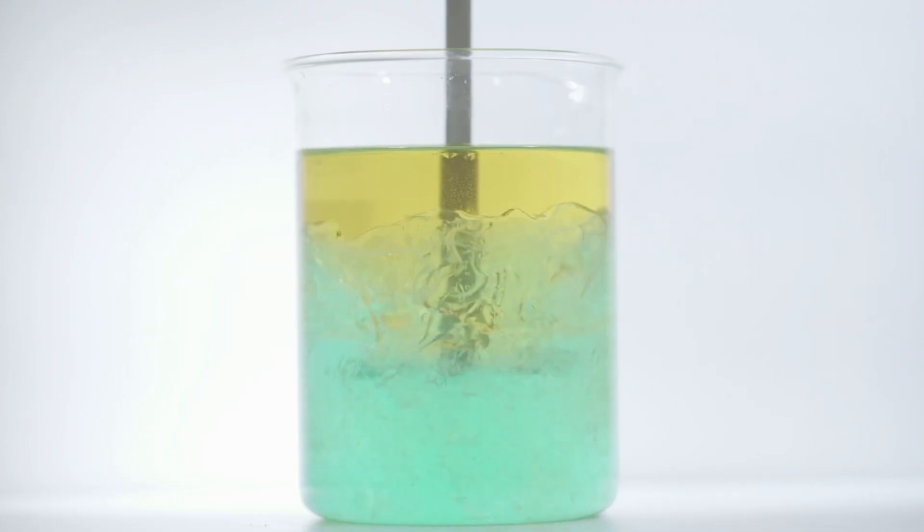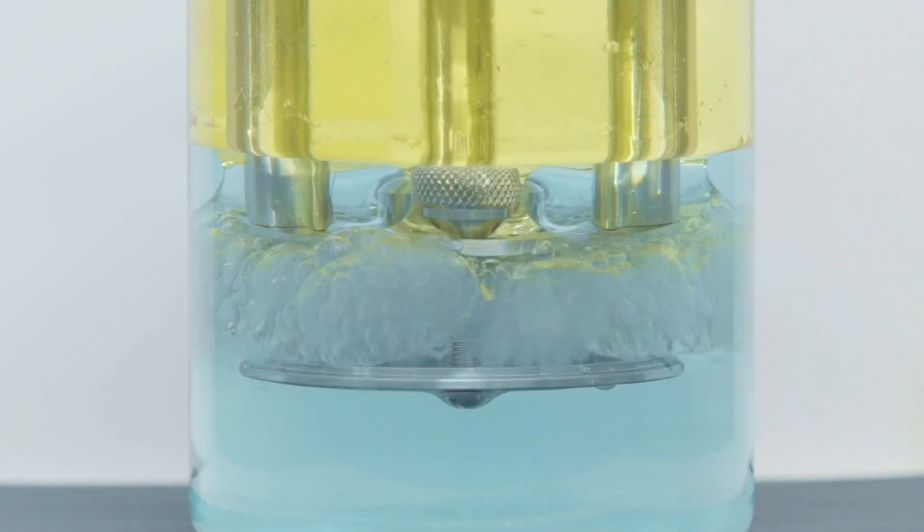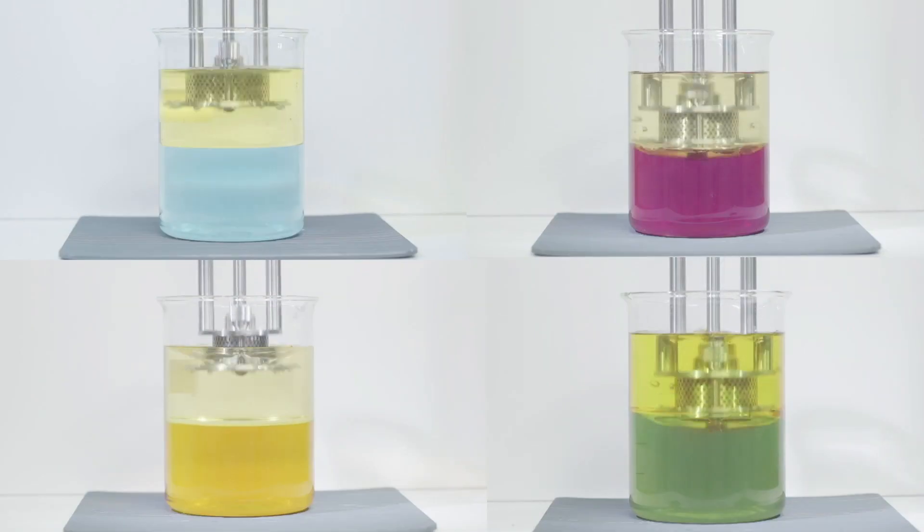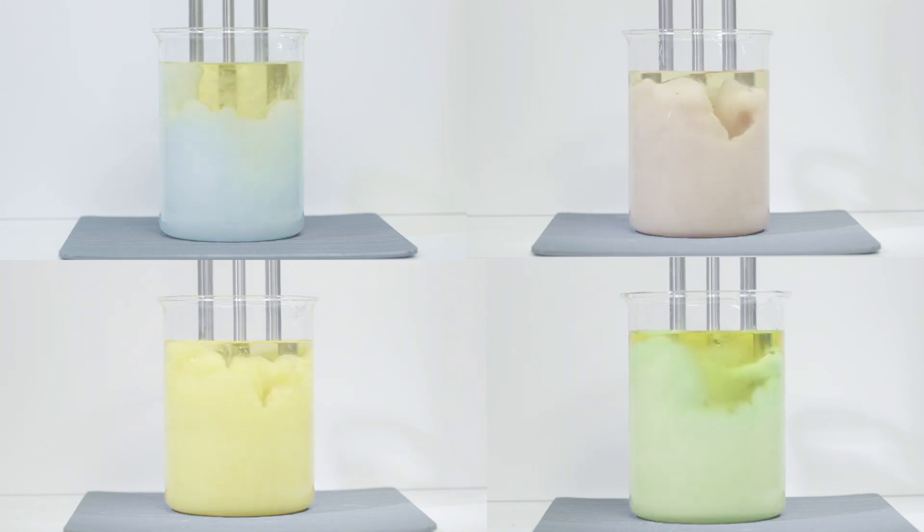Unlike a conventional agitator, which just moves the two liquid phases around, the high-shear mixer sucks the liquids into the workhead and forces them out through the holes in the stator. In this case, an emulsor screen, which reduces them to a fine globule size.